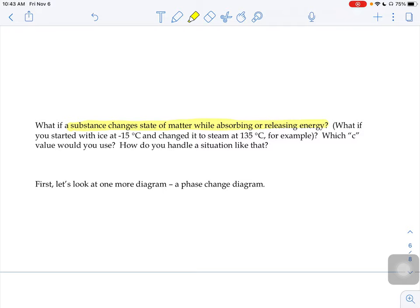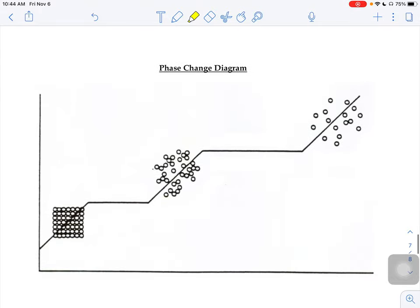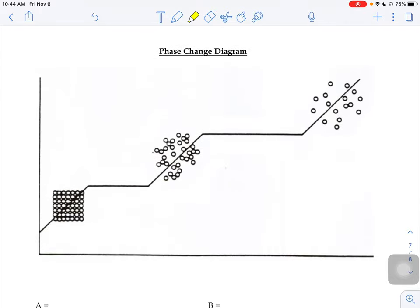What if it freezes or condenses where it starts as one state of matter and then a different state of matter? We're going to look at one more diagram, a phase change diagram, to help us figure that out.